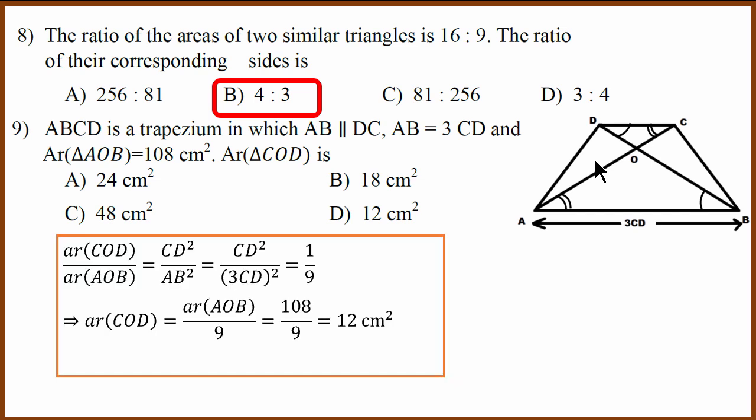Ninth question is bit tricky question. We know that COD is similar to AOB. Why? Because all the three angles are same. Now we also know that area of the two triangles are proportional to the square of the side. So CD square divided by AB square. They have said it as it is 3 CD square. So CD square CD square will get cancelled and we have 1 by 9. What can we say about COD? We can say that COD can be said as 108 divided by 9 which is 12 centimeter square. The correct answer is 12.